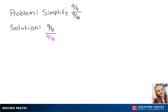So this is equal to 9 fourths times 16 ninths. To make this easier, we can rearrange the numbers, and this will be equal to 9 ninths times 16 fourths.